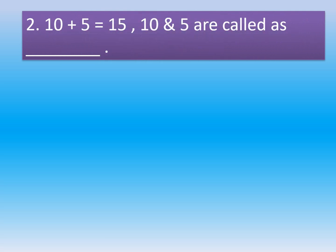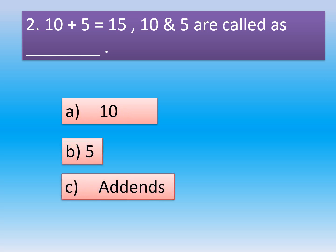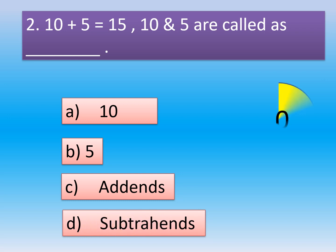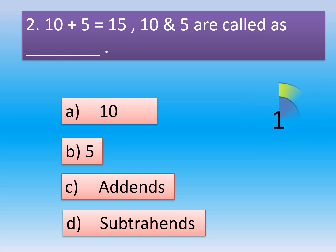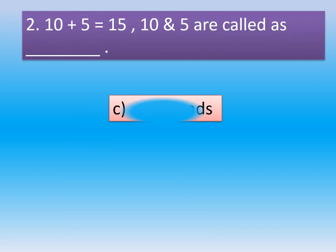Question 2: 10 plus 5 is equal to 15. 10 and 5 are called as dash. Option A: 10. Option B: 5. Option C: Addends. Option D: Subtrahends. The correct option is Option C, Addends. 10 and 5 are called as addends.